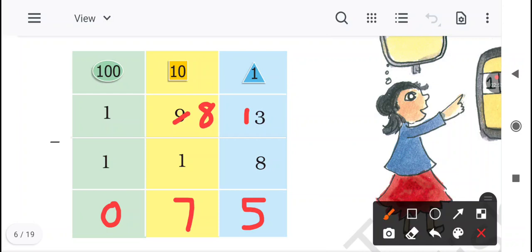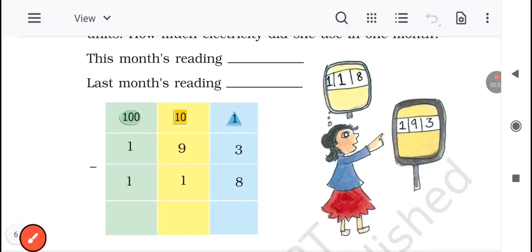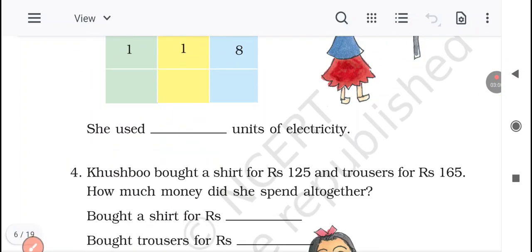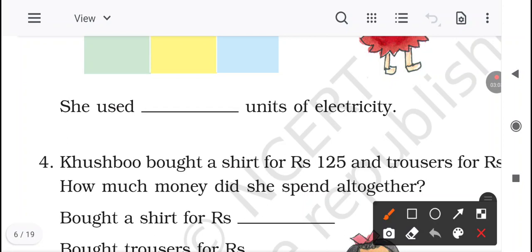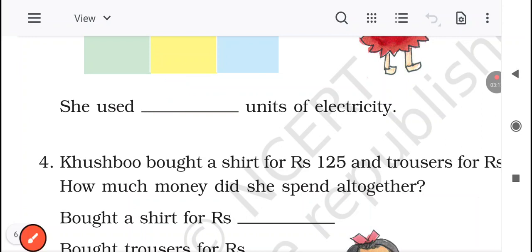So in one month, kitna electricity consume ho raha hai? 75 units. So she used 75 units of electricity.